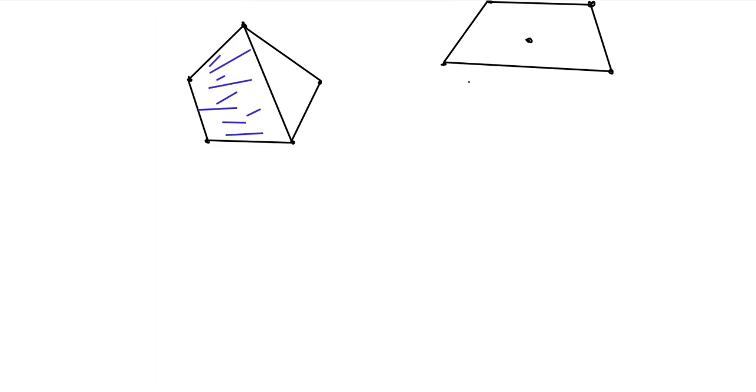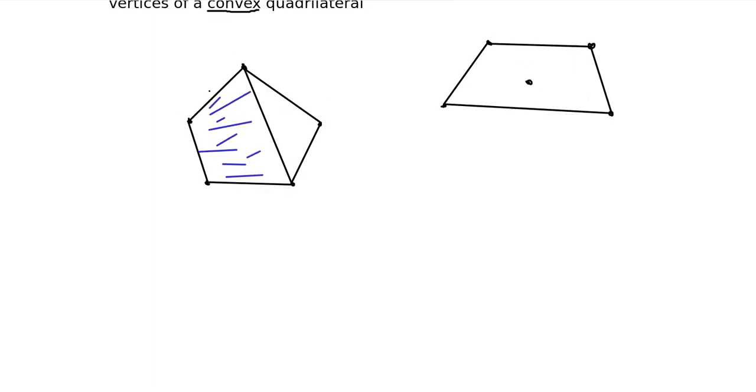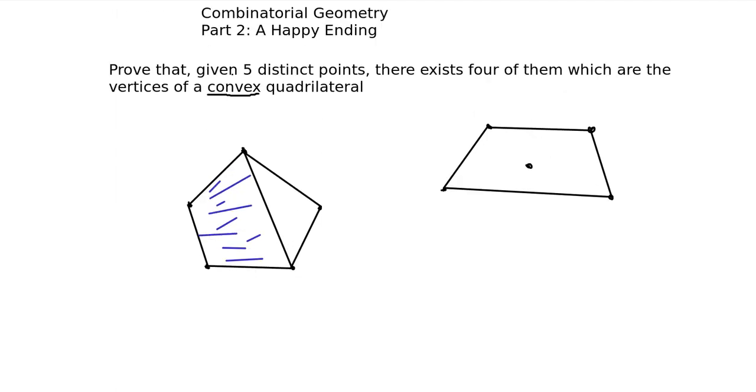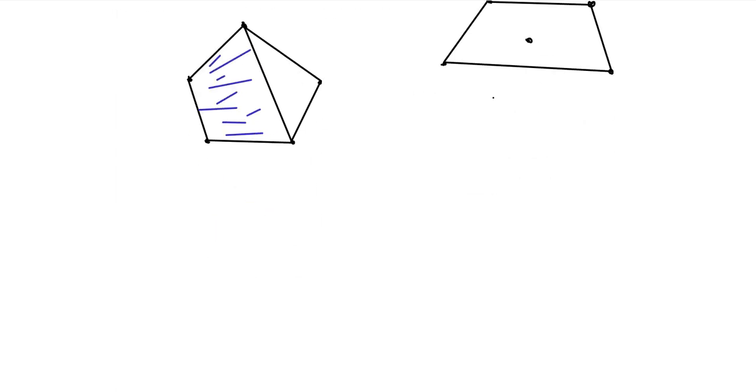But there's one more case. Obviously we can't have any higher polygon than a pentagon here because we only have five vertices. So the smallest polygon we could have is a triangle. So what happens if we have a triangle here and two points inside of it? How can we show that we will have a convex quadrilateral?